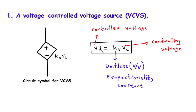To understand this better, imagine we have a circuit where the controlling voltage VC is derived from the voltage across a specific circuit element located elsewhere. By adjusting the voltage of that circuit element, we can effectively control the output voltage VD of the VCVS.